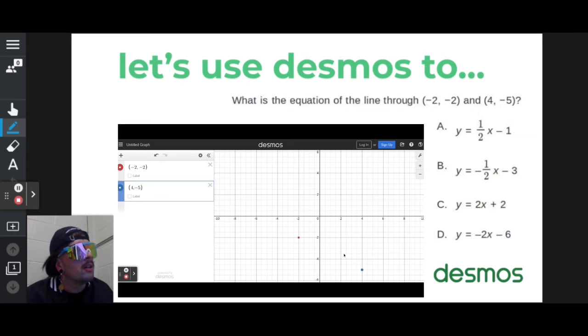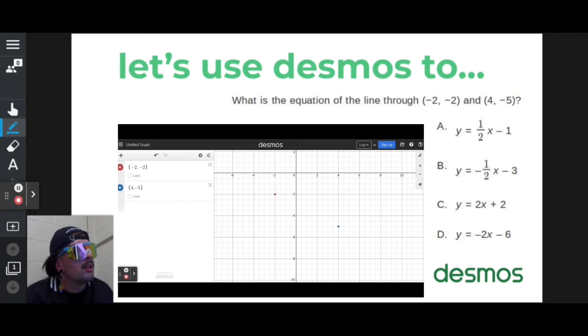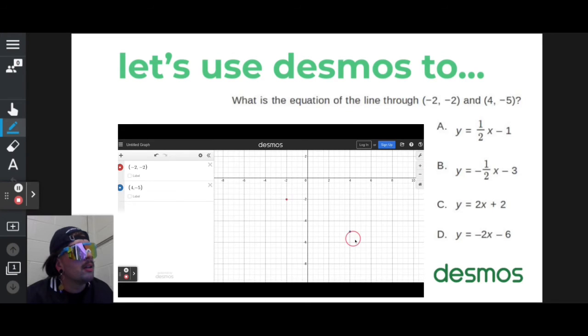And so I can see my two points. If I want to, I can grab my graph, move it around, zoom it out, zoom it in, whatever you have to do.